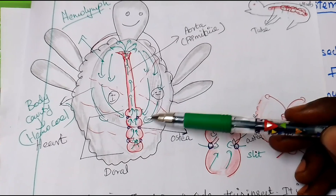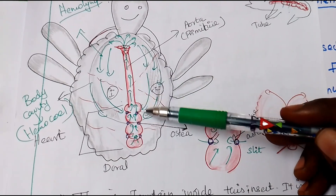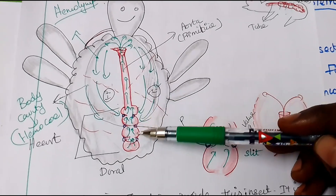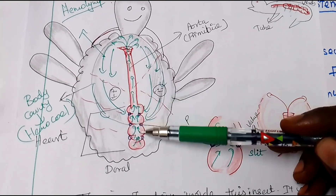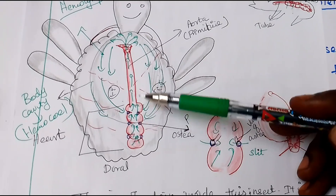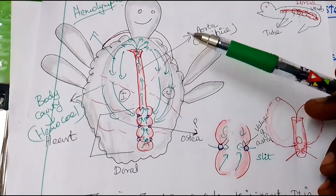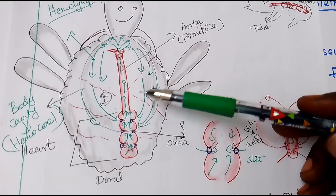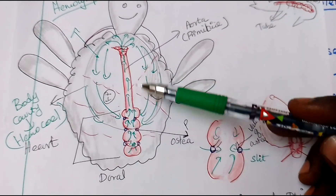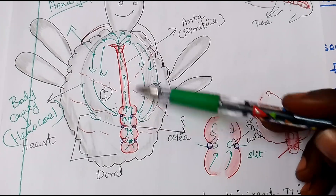The metabolic waste has no different structure — it is taken back through this pump to the alimentary canal and excreted. The lymphatic system and the circulatory system are together. The blood color of the insect is usually greenish and is called hemolymph. The body cavity is called the hemocoel. This is why it is called the open circulatory system.